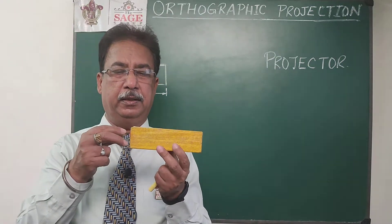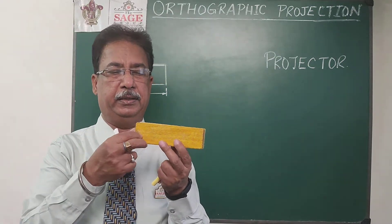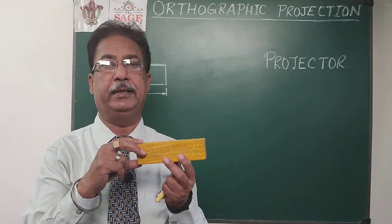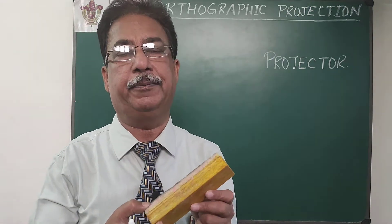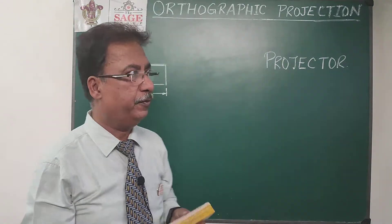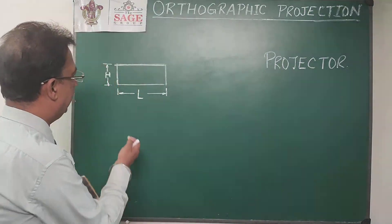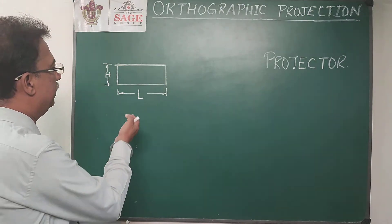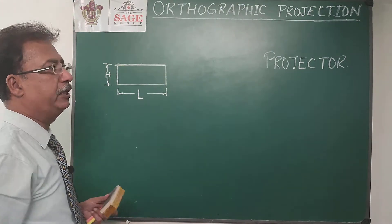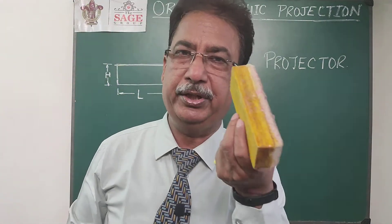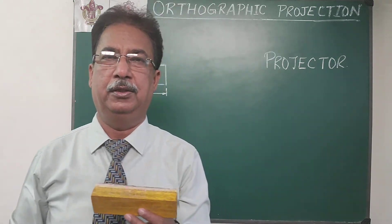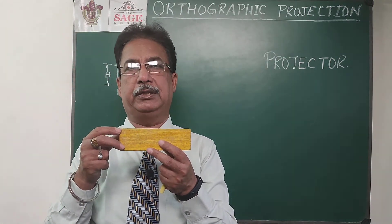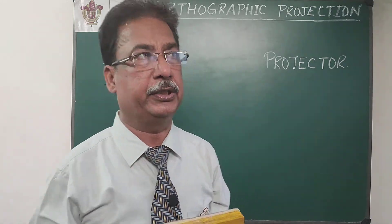As you can see, in this figure we are getting only two dimensions — one will be the length and the second will be the height. But the thickness T will be missing. So it means if I send this drawing to someone, they will say that maybe this object is just a rectangle, not a 3D object. So in this type of projection — which is actually orthographic projection — information is incomplete.